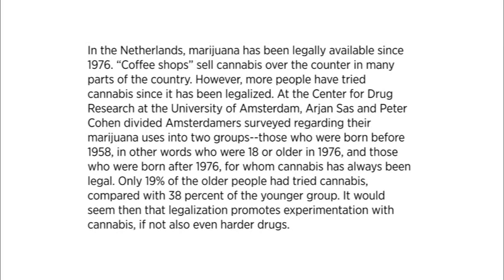Now let's take a look at this paragraph together. First, let's go to the topic sentence: 'In the Netherlands, marijuana has been legally available since 1976.' That's really important — the author is telling us we have a lot of history with this. The conclusion sentence reads: 'It would seem then that legalization promotes experimentation with cannabis, if not even harder drugs.' There are two ideas there: first, that legalization increases usage, and second, that it may be a gateway to other drugs.